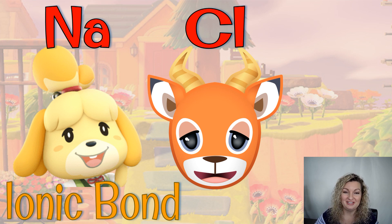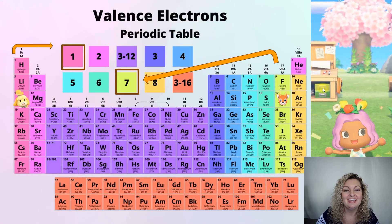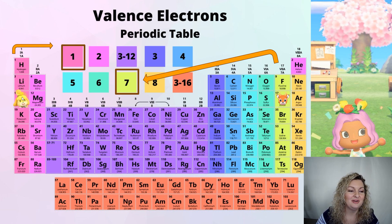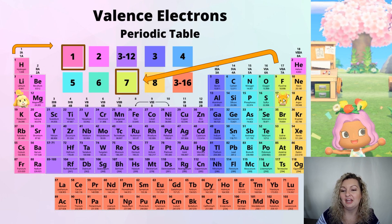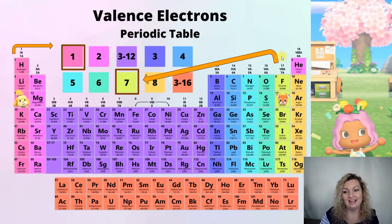We're going to start with ionic bonds. Here we have two separate characters from Animal Crossing. I made one of them sodium and the other one chlorine, and we're going to see how they can form an ionic bond. First we need to look at the periodic table. Sodium, because it's in the alkali family, it does have one valence electron in group one. And over here we have chlorine, and chlorine is a halogen, and because it's in group 17, it has seven valence electrons.